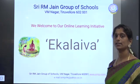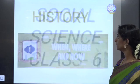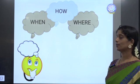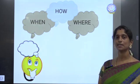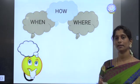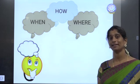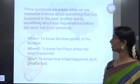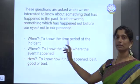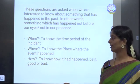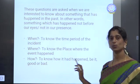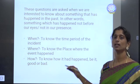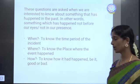We are starting with the History first lesson: When, Where and How. When do we ask these questions? We ask them when we want to know about something — when it happened, where it happened, or how it happened. 'When' is to know the time period of an incident or a particular event. 'Where' is to know the place where it happened. And 'How' — whether it is a good event or a bad event — is just to know how it happened.